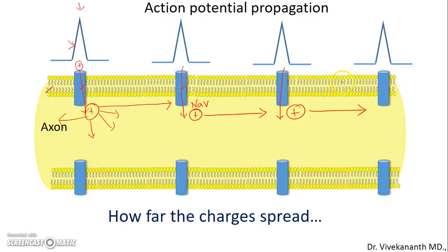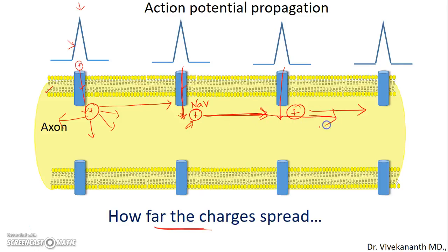But what is the most important factor that decides the speed of this action potential propagation? That is, how far a charge has spread. The charges, once they enter the axon during depolarization, have to spread as far as possible to open more and more voltage-gated sodium channels at distant sites. This essentially determines the speed at which the action potential is propagated in the axon.